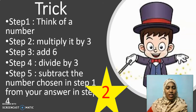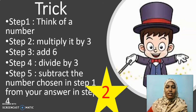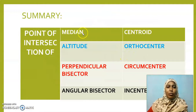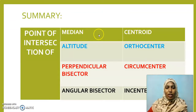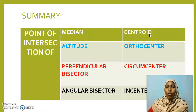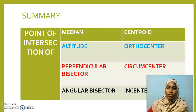Today, before getting into the class, let us have a small recap of whatever we have learnt in this chapter. To start with, we learnt what is a median. A median is the line segment joining the vertex and the midpoint of the opposite side. We will have 3 medians in a triangle, and all these 3 medians meet at a point called the centroid, which divides the median in the ratio 2:1.